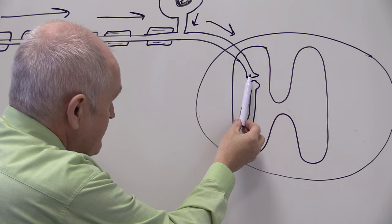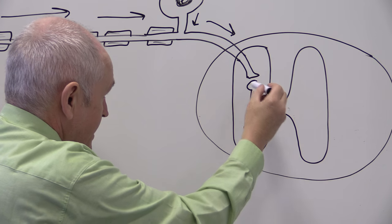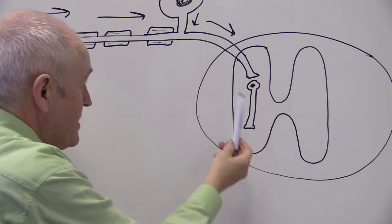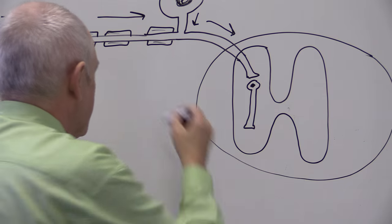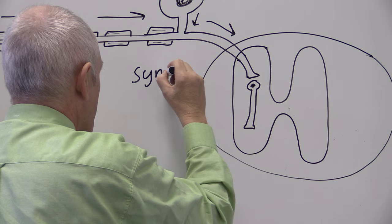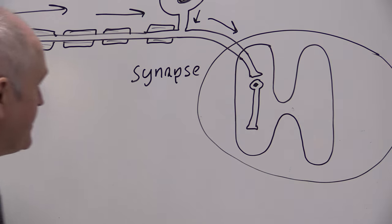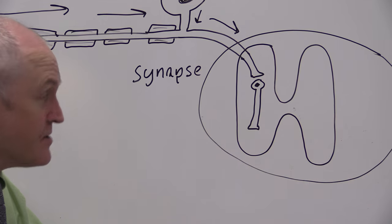And we notice that the sensory neuron is not touching the relay neuron. There's a physical gap, and that physical gap, of course, is the synapse. There's always this physical gap; they don't actually touch.